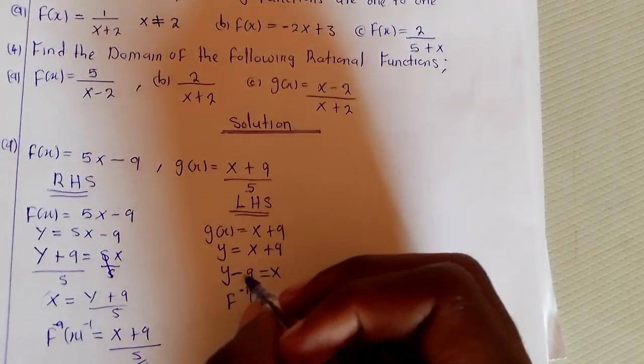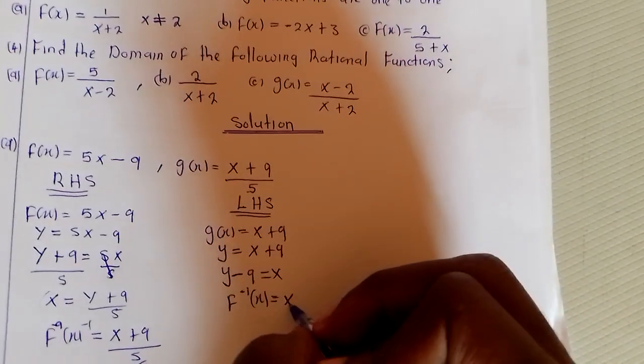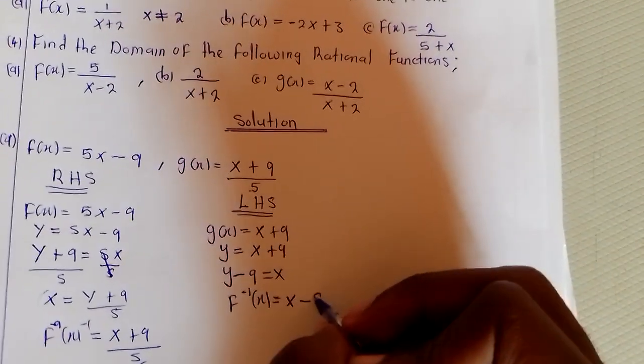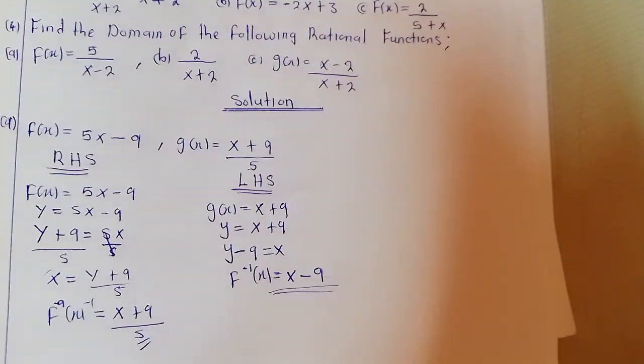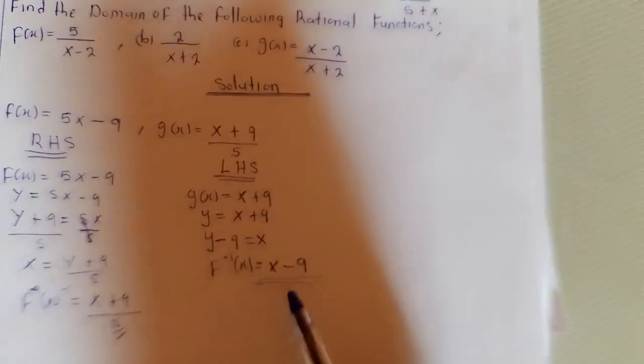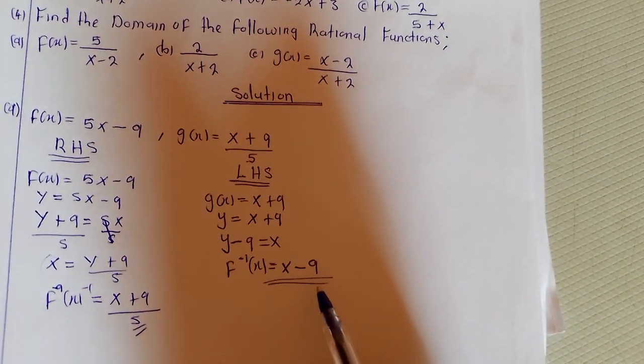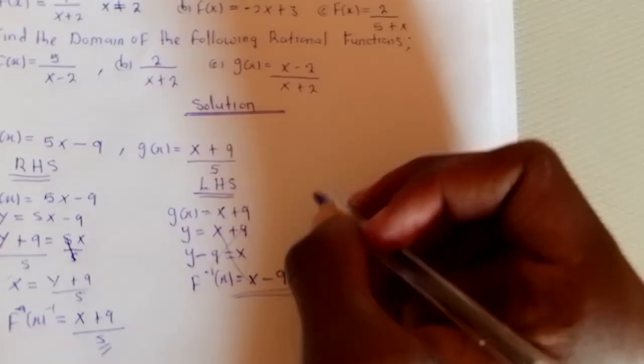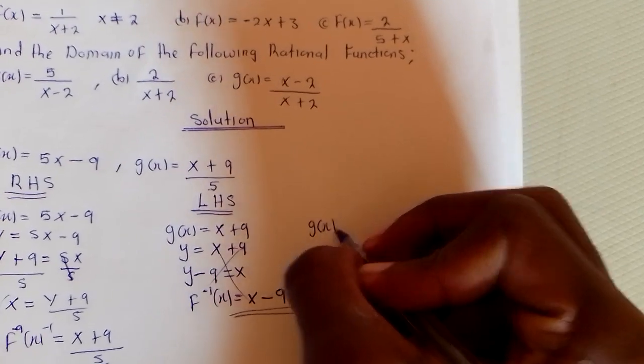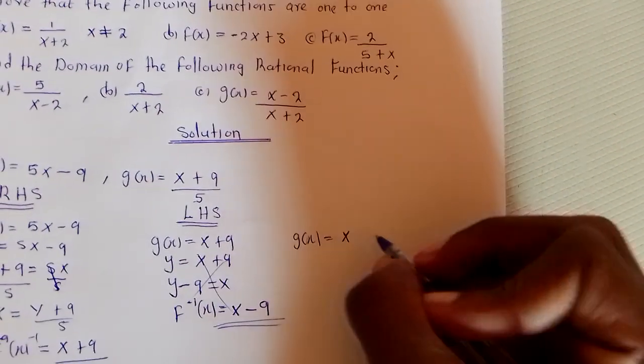Wait a minute, I made a mistake. Let me correct this. We had g(x) = (x + 9)/5, so y = (x + 9)/5.